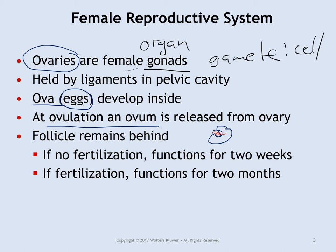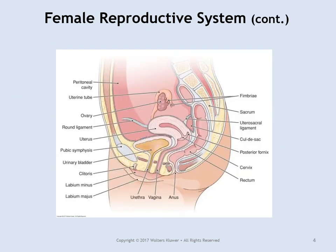The corpus luteum has a natural lifespan of two weeks — after two weeks it'll die off. However, if that egg cell is fertilized, it will produce a hormone that keeps the corpus luteum alive for a couple of months. We'll look at how this happens in more detail later.